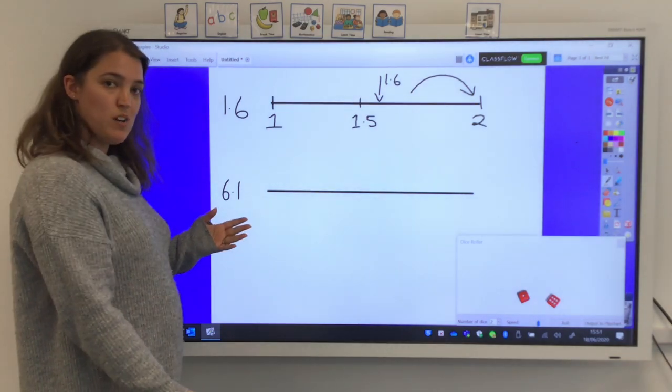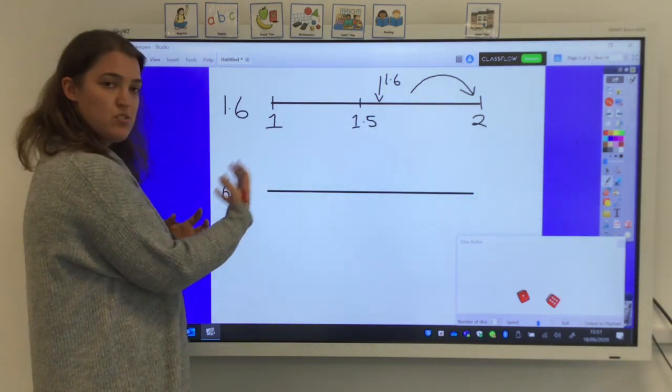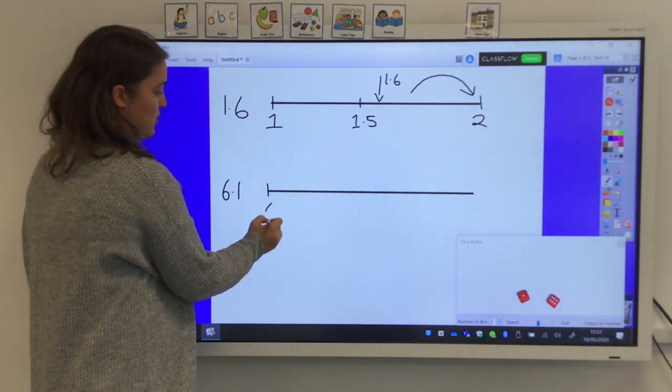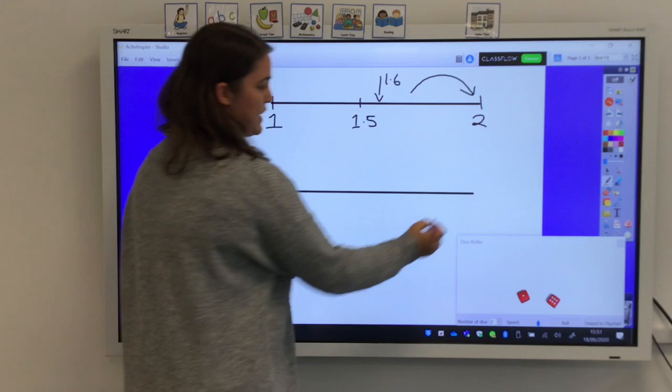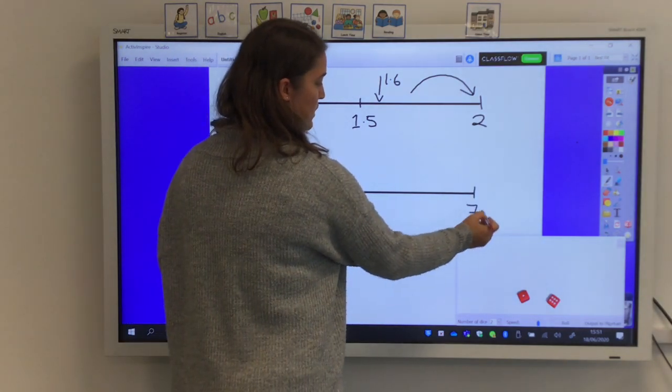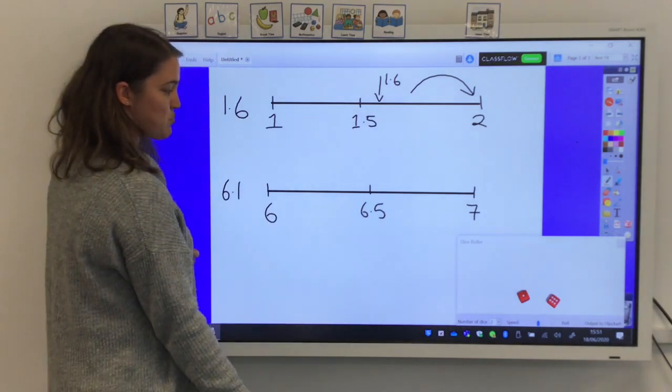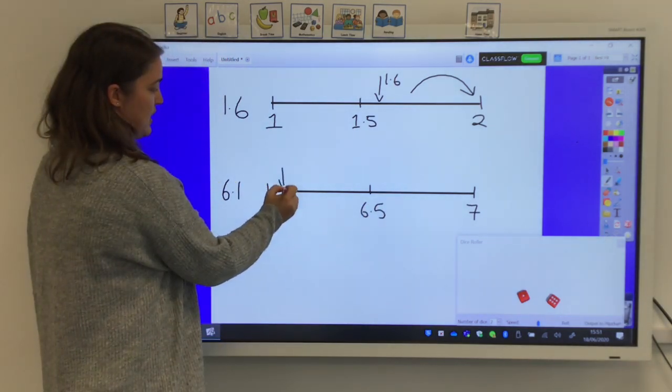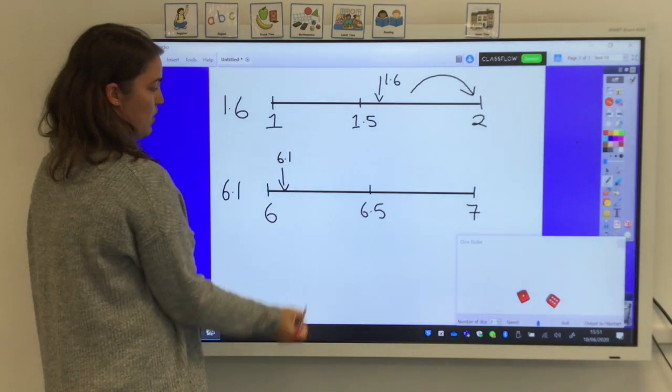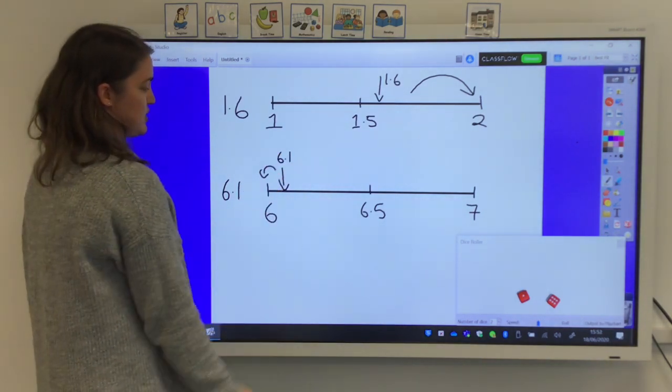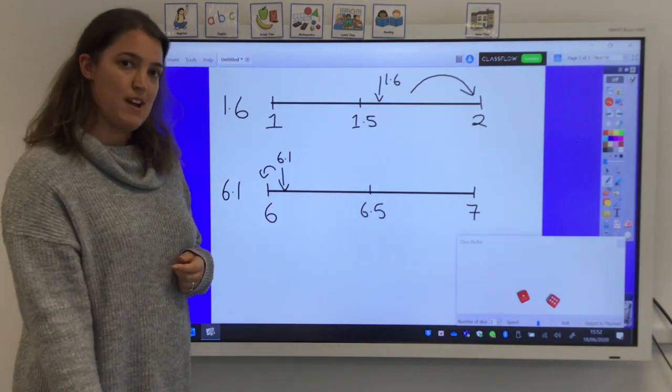If however I had my 6.1, I've got 6 wholes and 1 tenth, so 6 and a little bit extra. So it would lie somewhere in between 6 and the next whole number, 7. Again, I'll mark my halfway point, which is 6.5. And then add on where I think my number would go. On a number line, you can immediately see much closer to 6. So 6.1 would round down to 6.